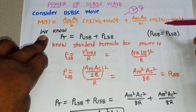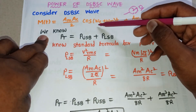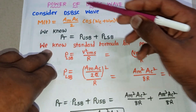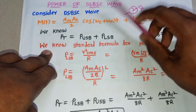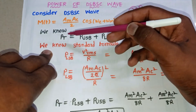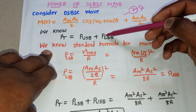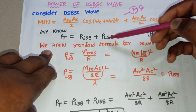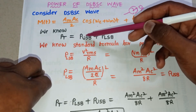(ωc + ωm) is the upper sideband and (ωc - ωm) is the lower sideband. Since the DSBSC wave has only two sidebands and no carrier, the total power Pt equals the power of the upper sideband (P_USB) plus the power of the lower sideband (P_LSB).